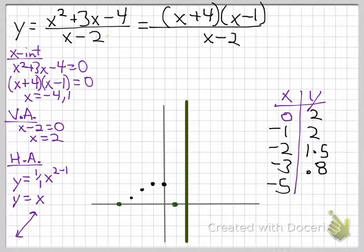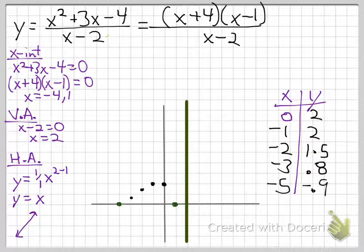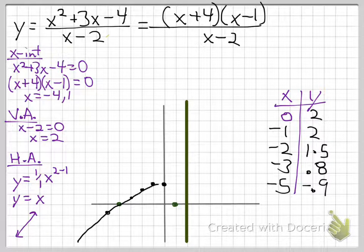We try negative 5 to confirm the behavior outside the intercepts. Plugging in gives (negative 1)(negative 6) over (negative 7), which is about negative 0.9. So the graph comes in, turns, and heads down, fitting the expected behavior.